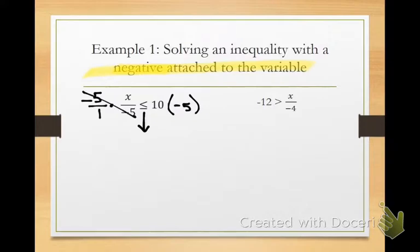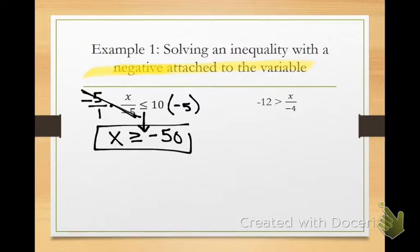So we still multiply the same way. Our negative 5s cancel. 10 times negative 5 is negative 50. But now instead of it being less than or equal to, it's going to be greater than or equal to negative 50. And that's going to be our answer. So here's our only exception to the rule, basically a difference between equations and inequalities. When I have to multiply or divide by a negative, when it's attached to the variable, I have to reverse my inequality.